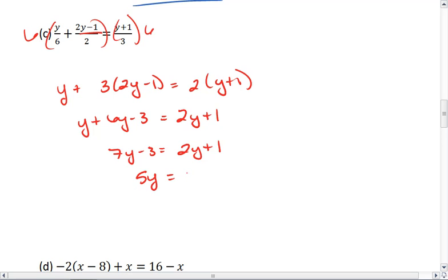Hold on. It does help when I distribute properly, so 2y plus 2. So now we subtract 2y from both sides to get 5y. We add 3 to both sides to get 5. And thus y equals 1. So our solution set is either y equals 1 or the set which includes the element 1.